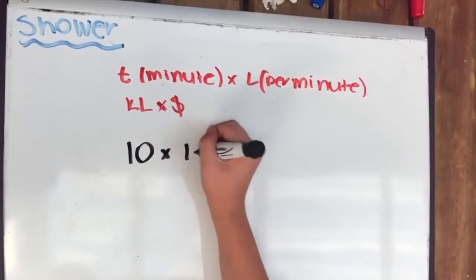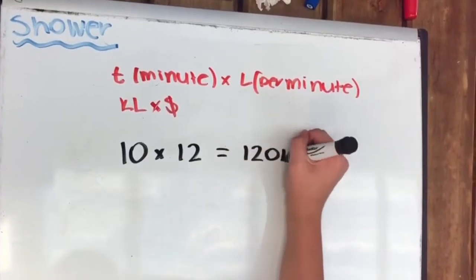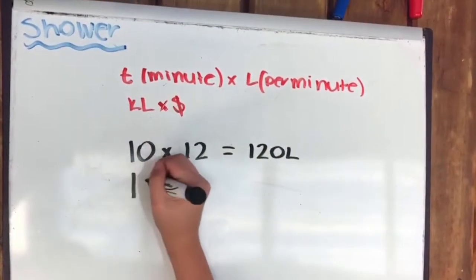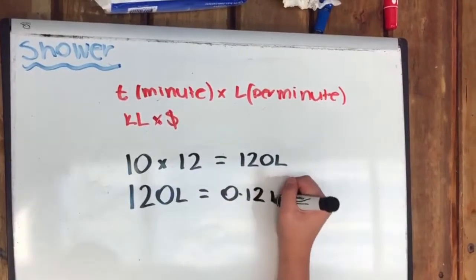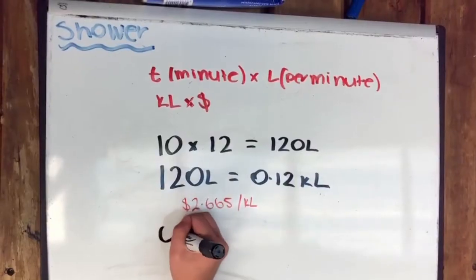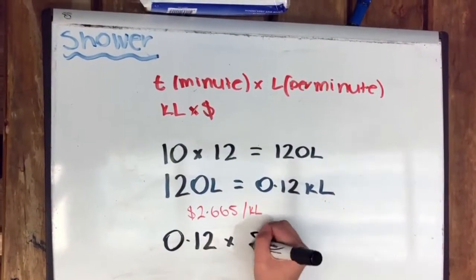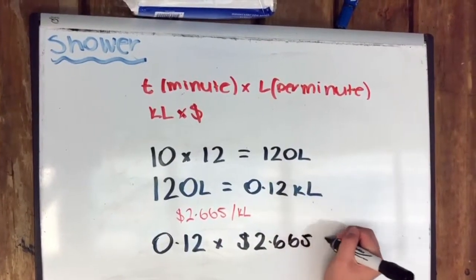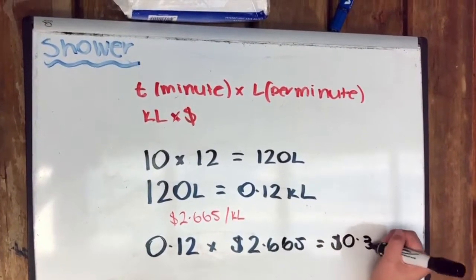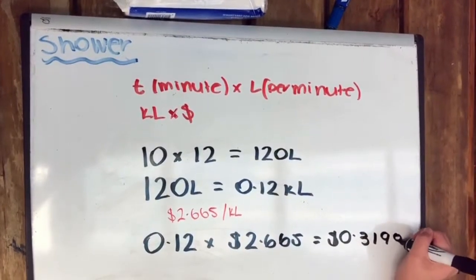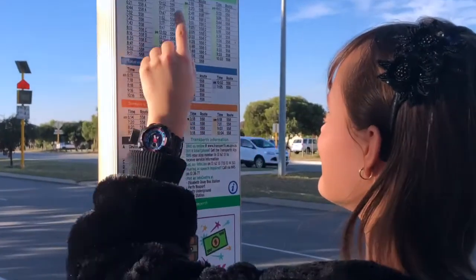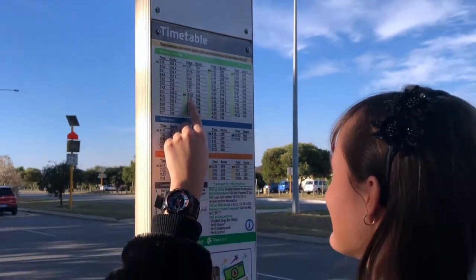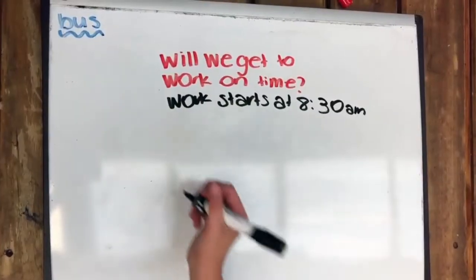10 times 12 equals 120 litres. 120 litres are equal to 0.12. 0.12 times by 2.665 which equals 0.9198.